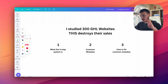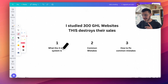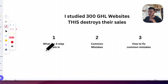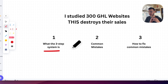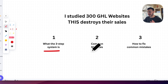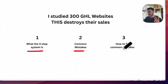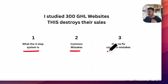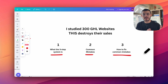What I'm going to do in this video is walk you through three things. The first is run you through the three-step system that I use when I build websites for my clients and for myself. Number two, I'm going to show you common mistakes that I see on a lot of GHL websites, and three, I'm going to show you how to fix those mistakes so you can build a website that gets you sales.